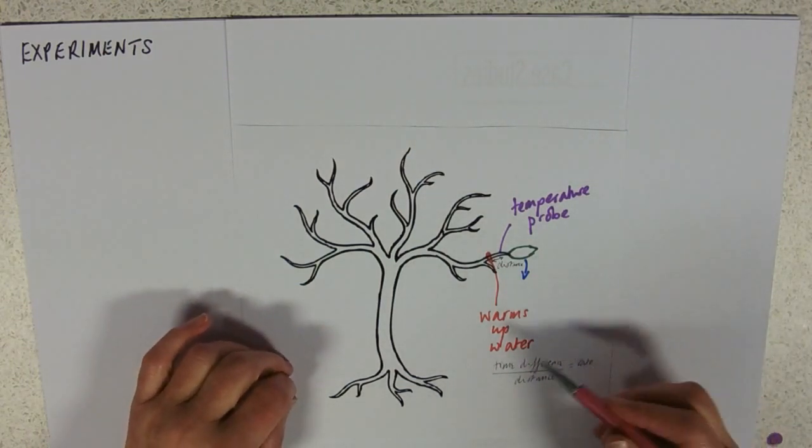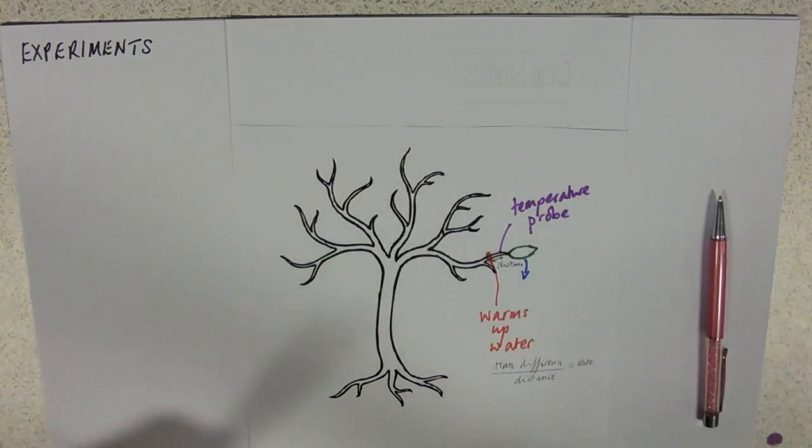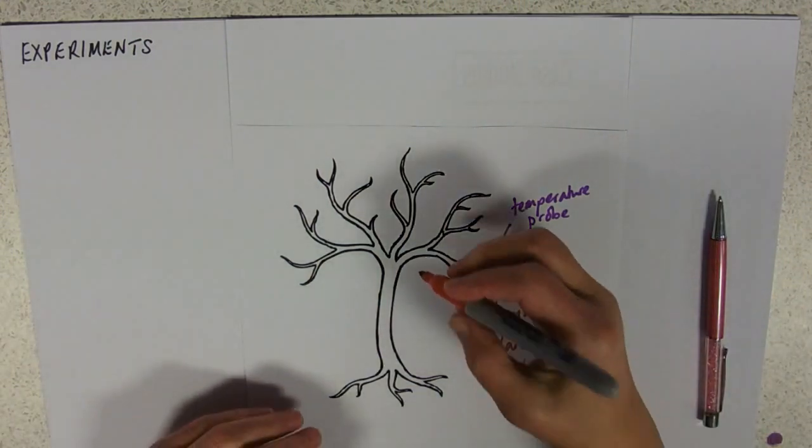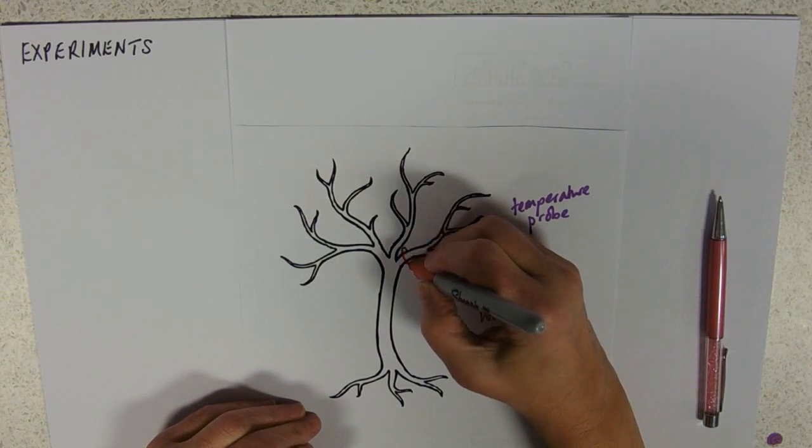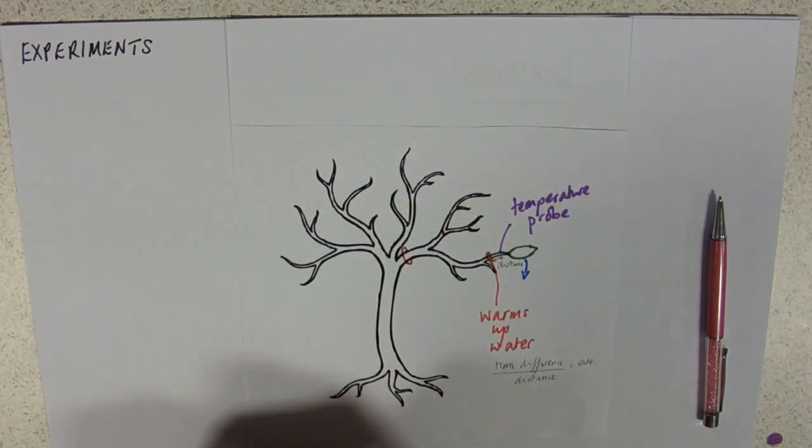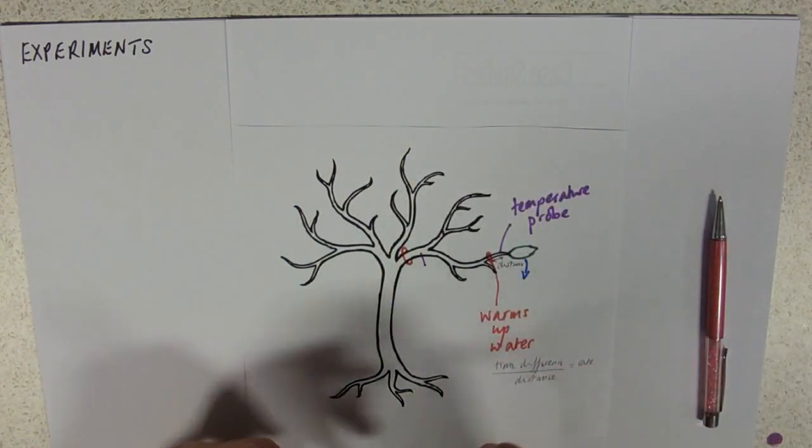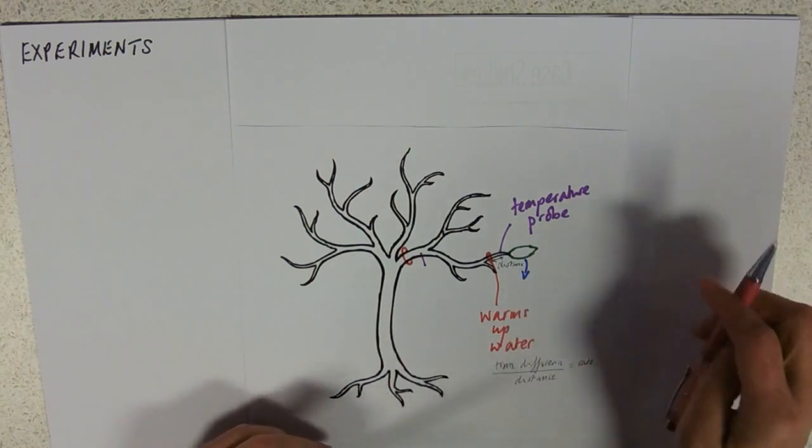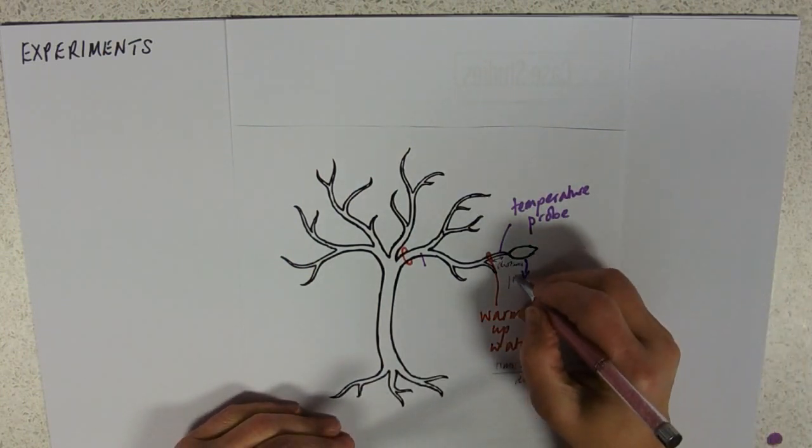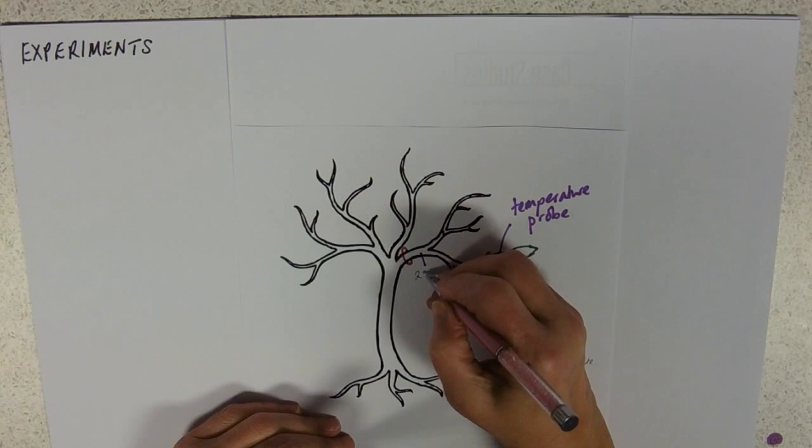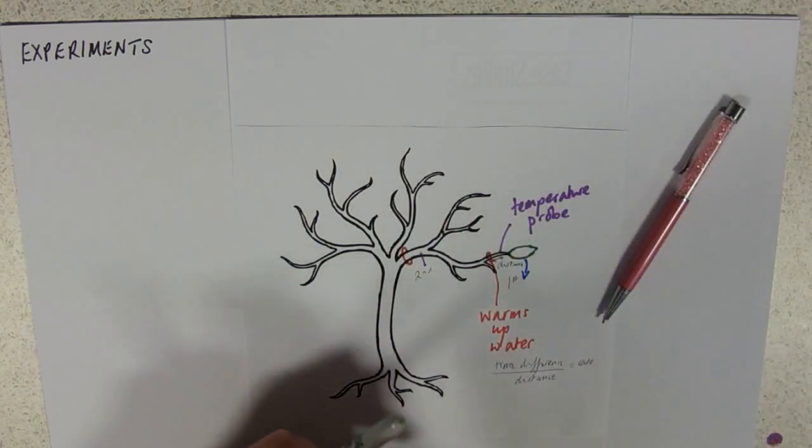And actually, if you then did it say further back in the branch of a tree, and you put your temperature probe in over the same distance, you'd see that it moves first up here, and then sort of later on it would move down there.